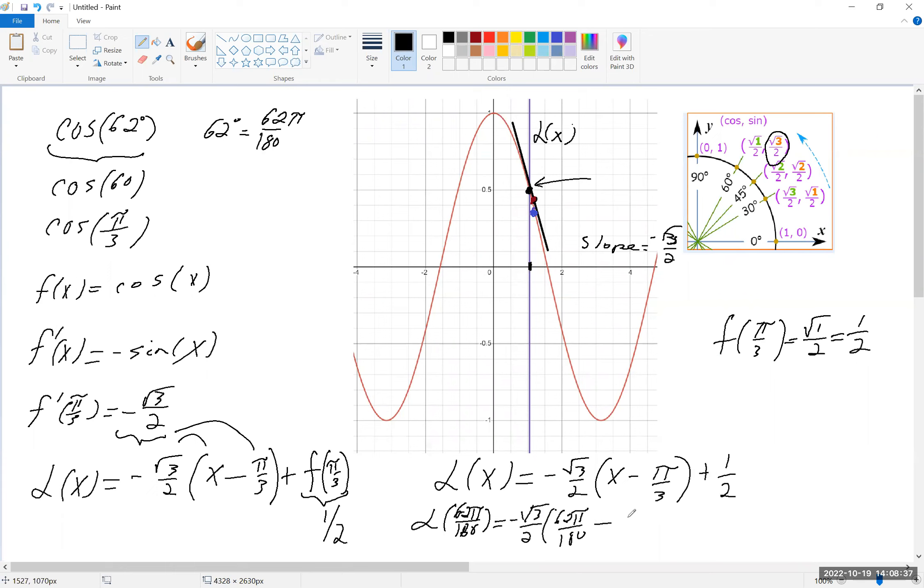Now, if I multiply both by 60, I end up with 60 pi over 180, plus 1 half, which is equal to root 3 over 2 times 2 pi over 180. Of course, the 2's are going to cancel.